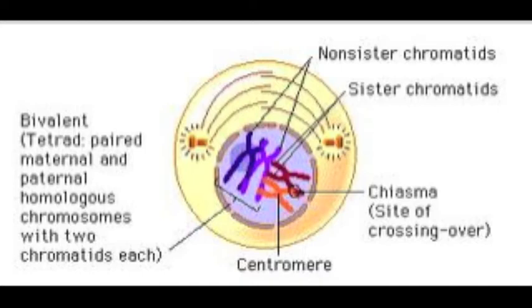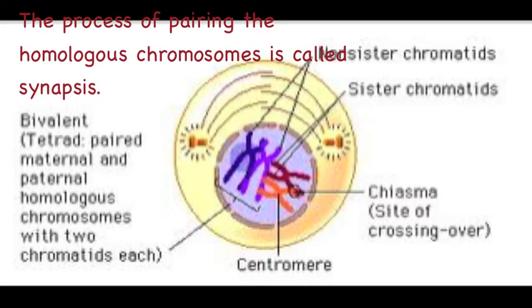Prophase 1 is the longest phase of meiosis. Here, homologous chromosomes cross over and exchange DNA, which is important in genetic variation. Just like in mitosis, the nuclear envelope begins to disappear and the centrosomes begin to move towards the poles of the cell.